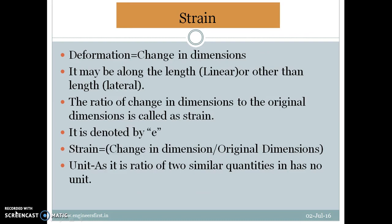Now let us discuss another basic term in Strength of Materials. Before discussing strain, it is important to understand deformation — it is nothing but a change in dimension. When we apply force, the change in dimension may be along the length, which is called linear deformation, or it may be in other dimensions, which is called lateral deformation. If we take the ratio of change in dimension to the original dimension, that quantity is known as strain. Strain is defined as the ratio of change in dimension to the original dimension. It is denoted by small e. Since it is a ratio of similar quantities, strain is dimensionless.